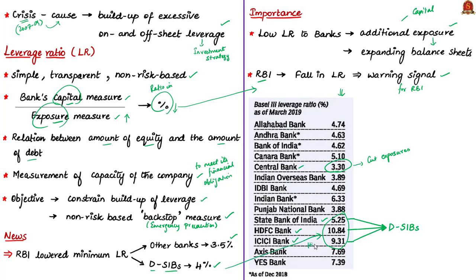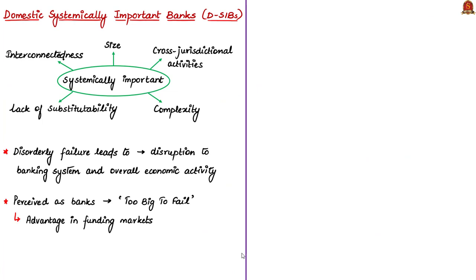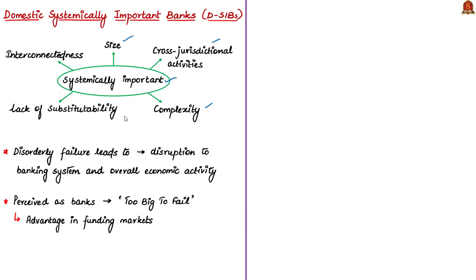RBI named SBI, ICICI Bank, and HDFC Bank as DSIBs — Domestic Systemically Important Banks — in its March 2019 communique. DSIBs are banks that become systemically important due to their size, cross-jurisdictional activities, complexity, lack of substitutability, and interconnectedness. Their disorderly failure has the potential to cause significant disruption to essential banking services and to the broader economy. These banks are perceived as 'too big to fail,' which creates an expectation of government support during times of distress.